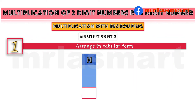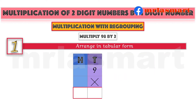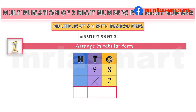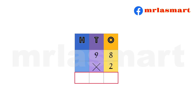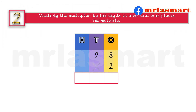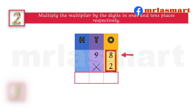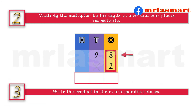Arrange in tabular form. Multiply the multiplier by the digits in the 1's and 10's places respectively. Write the product in the corresponding places.